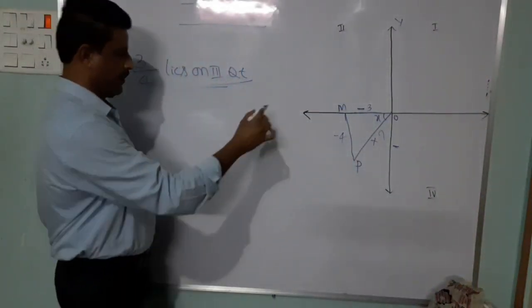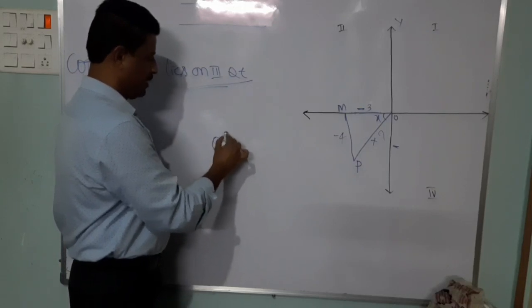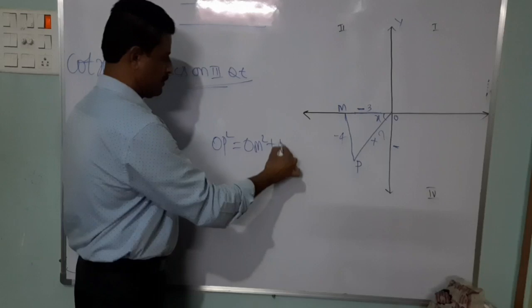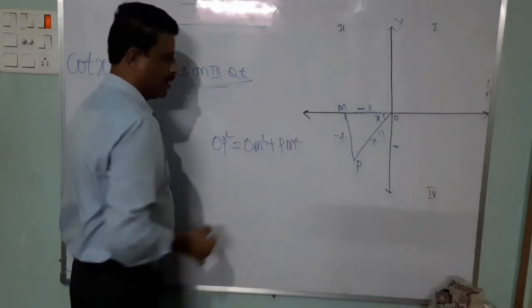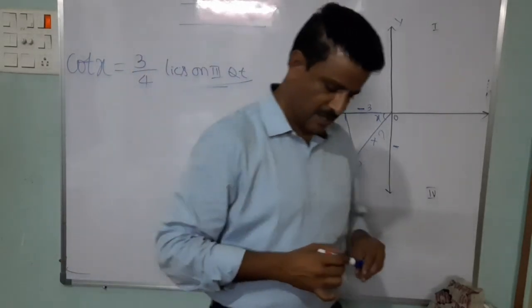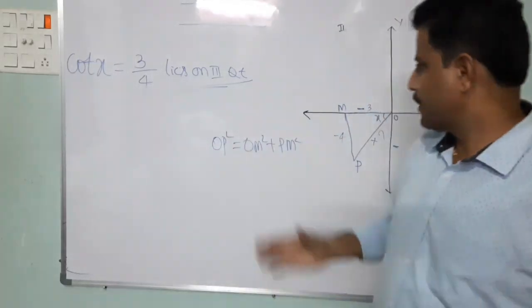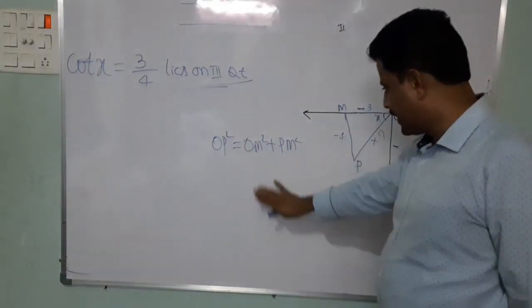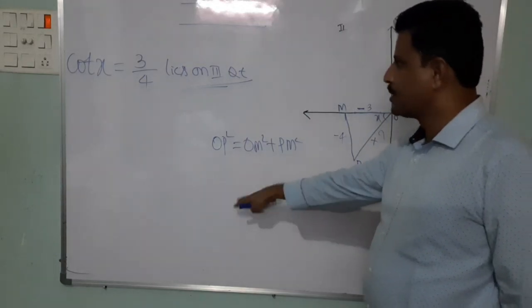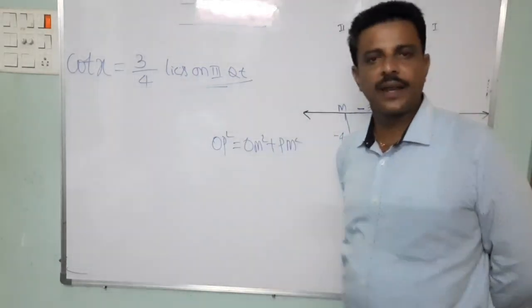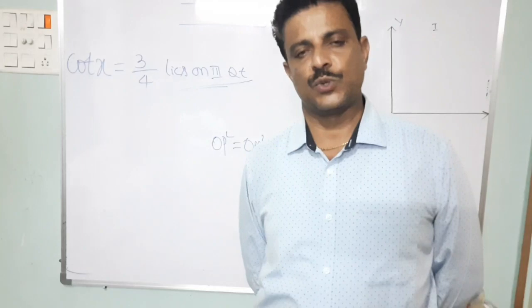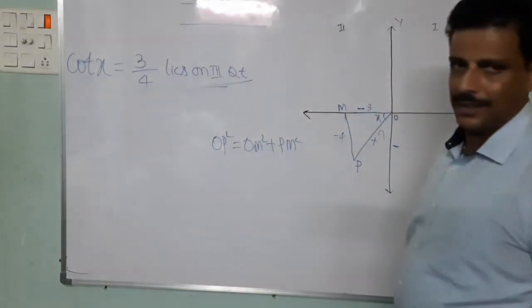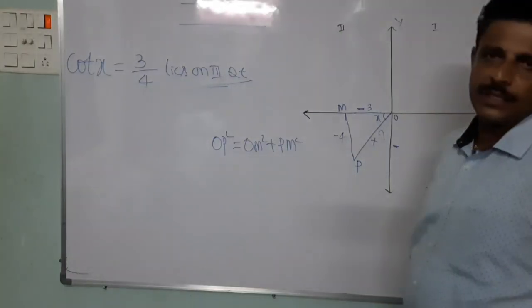Find OP using Pythagoras theorem: OP square equals OM square plus PM square. Substitute the values to find OP, then find all the other trigonometric ratios. Try to do this problem yourself — the answer will be covered in the next class.